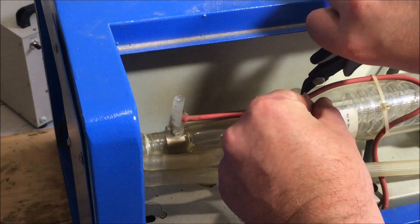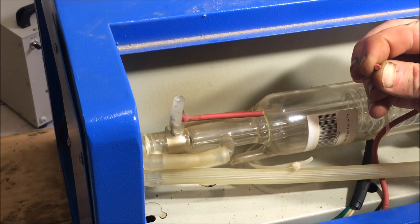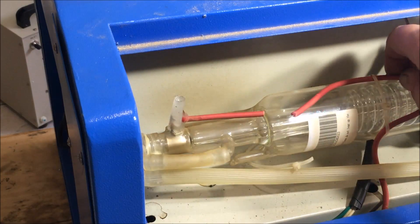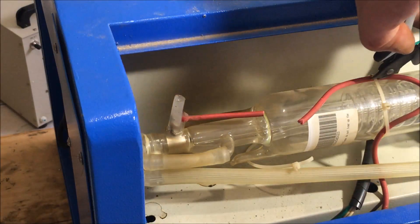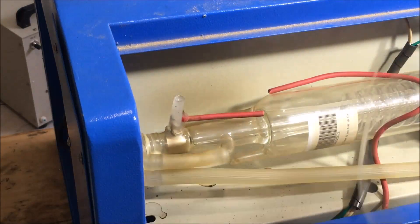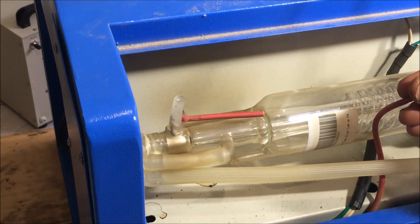This wire has a lot more insulation around it, and this is especially rated for the 22,000 volts coming through it.